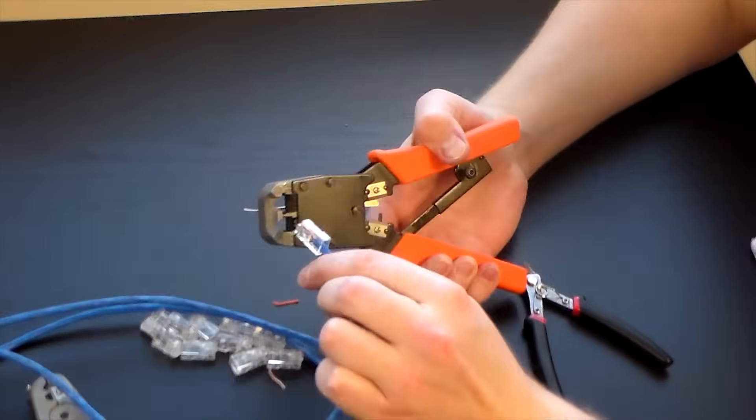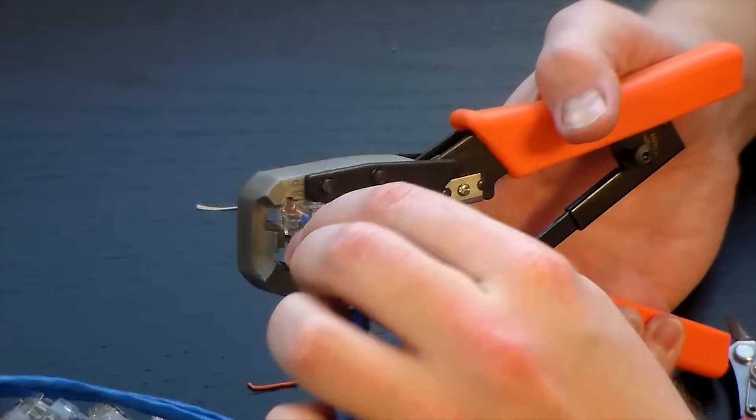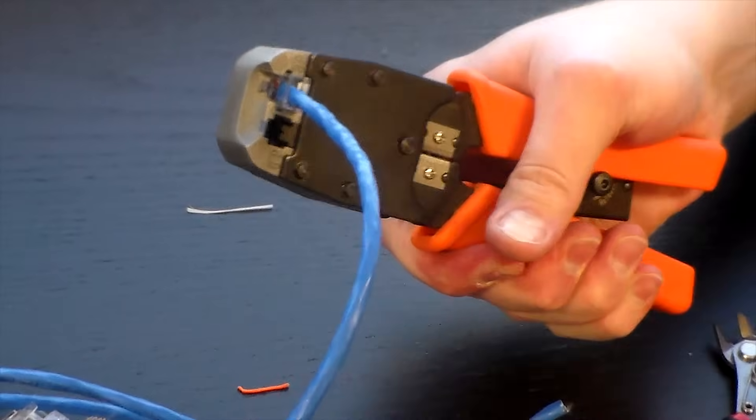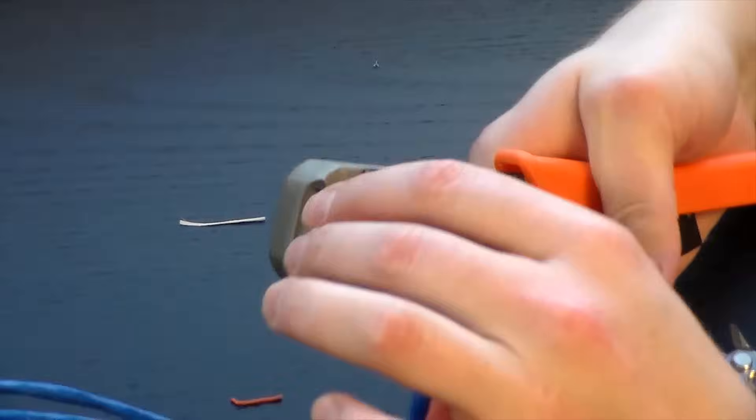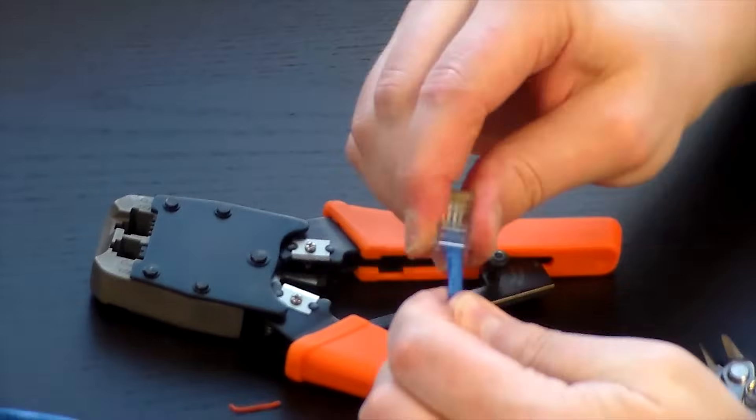You'll hear a little lock click. Once you do that, just squeeze the crimping tool closed. Now go ahead and unclip it from the tool, and there you have it. Good to go.